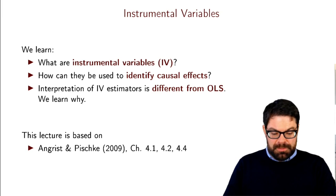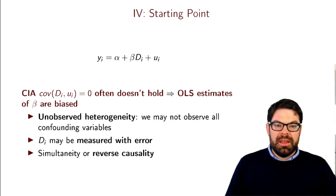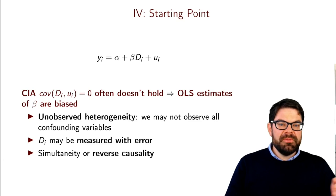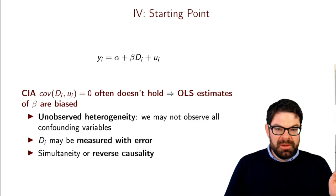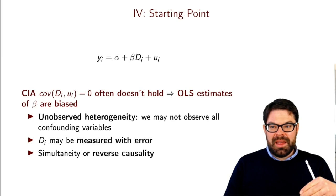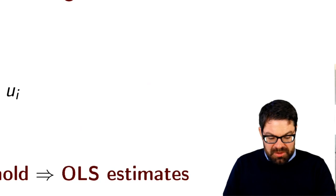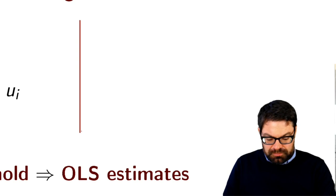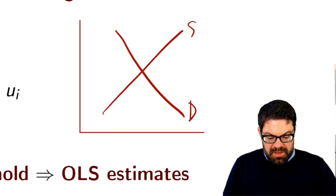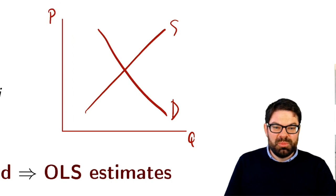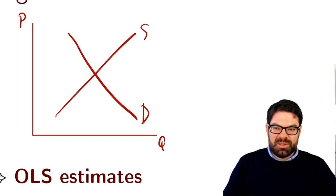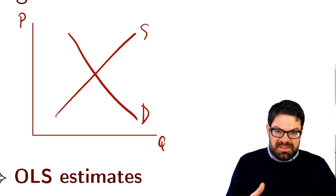The starting point for instrumental variables, before we go into any causal notation: instrumental variables, of all the techniques of causal inference, have probably been around the longest. They actually come from the desire to quantify what happens in markets. If you think about a very simple market where you have a supply and a demand curve — that's a theoretical model that every student in economics learns — testing this model is actually not that simple empirically.